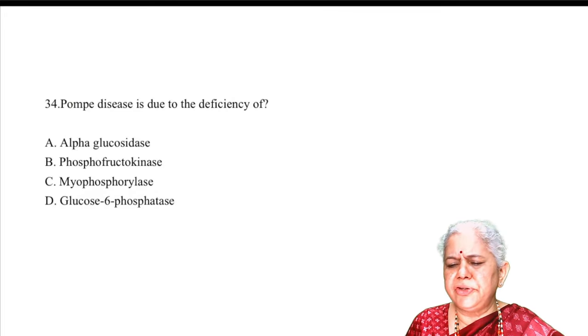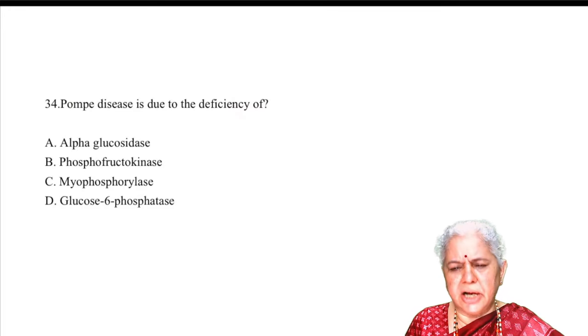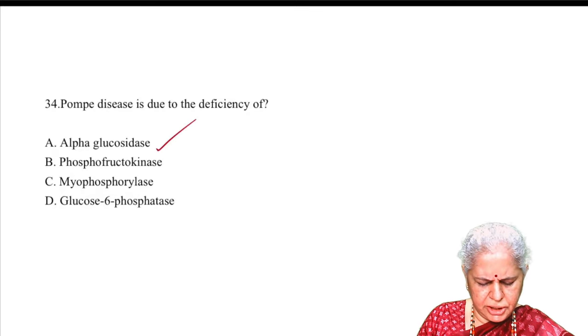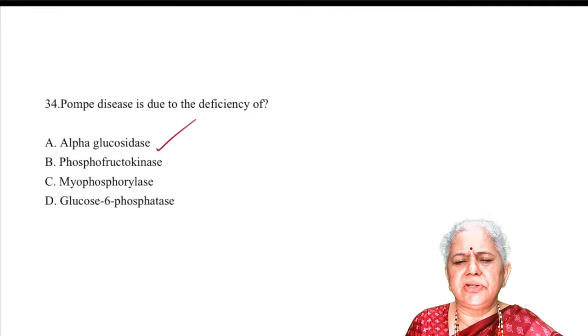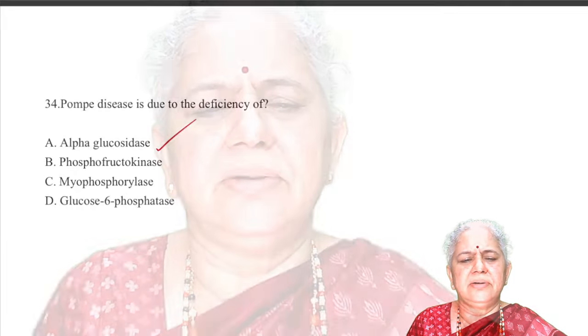In Pompe disease, the deficient enzyme is alpha-glucosidase — answer A. This enzyme deficiency is the basis of Pompe disease. That concludes the session. Thank you everyone; I hope you had a good learning experience.